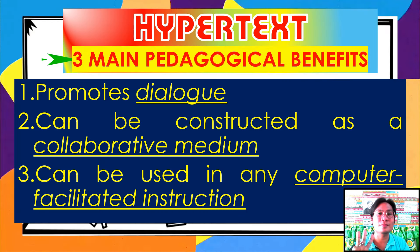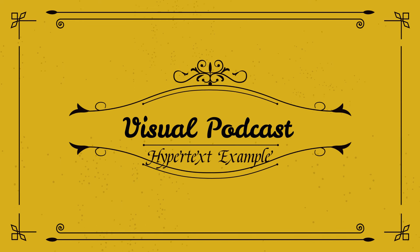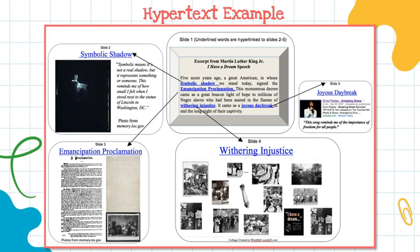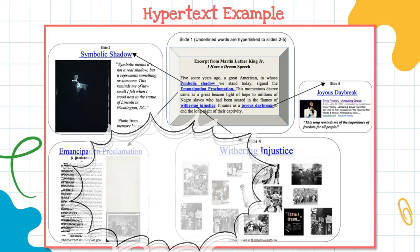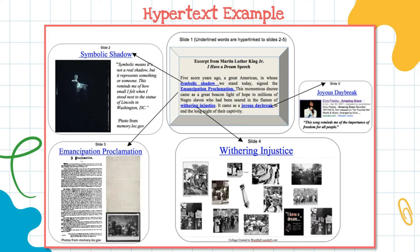Hypertext has three main pedagogical benefits: first, it promotes dialogue; second, it can be constructed as a collaborative medium; and third, it can be used in any computer-aided facilitated instruction. Hypertext is really helpful for writers and students. Underlined terms such as 'symbolic shadow,' 'emancipation proclamation,' 'withering injustice,' and 'joyous daybreak' can serve as hyperlinks. Clicking one of those words leads you to a different page which develops and explains the context of the hypertext — an excerpt from Martin Luther King Jr.'s 'I Have a Dream' speech.